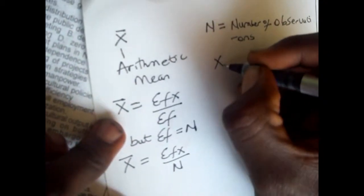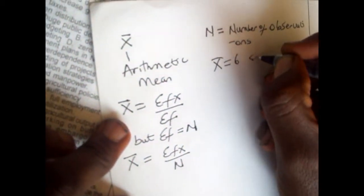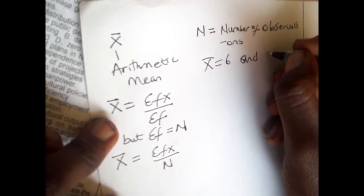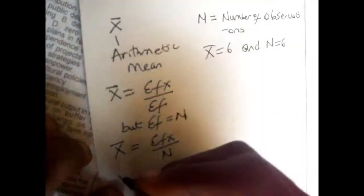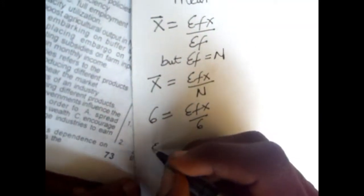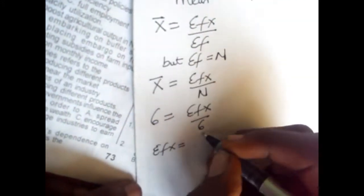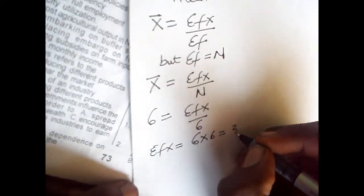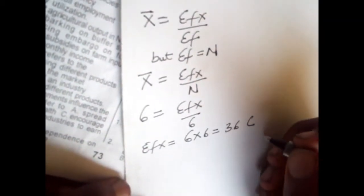x̄ is 6 and n is 6, so we write: 6 equals Σfx over 6. Therefore, Σfx equals 6 times 6, which equals 36.